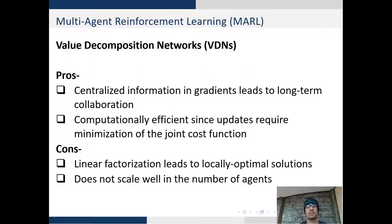the linear factorization is only locally optimal. Secondly, it does not scale well in the number of agents. For instance if you have multiple agents as discussed in population games then VDNs will not work very well because the Q-values will tend to take up very large values and it might blow up computer programs.